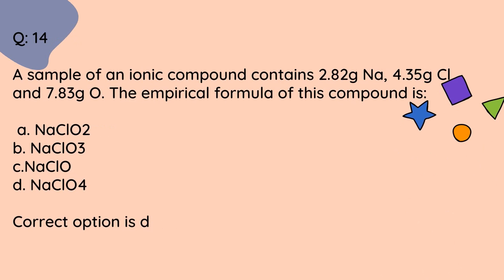Question number 14. A sample of an ionic compound contains 2.82 grams sodium, 4.35 grams chloride, and 7.83 grams oxygen. The empirical formula of this compound is: A. NaClO₂. B. NaClO₃. C. NaClO. D. NaClO₄. Correct option is D.